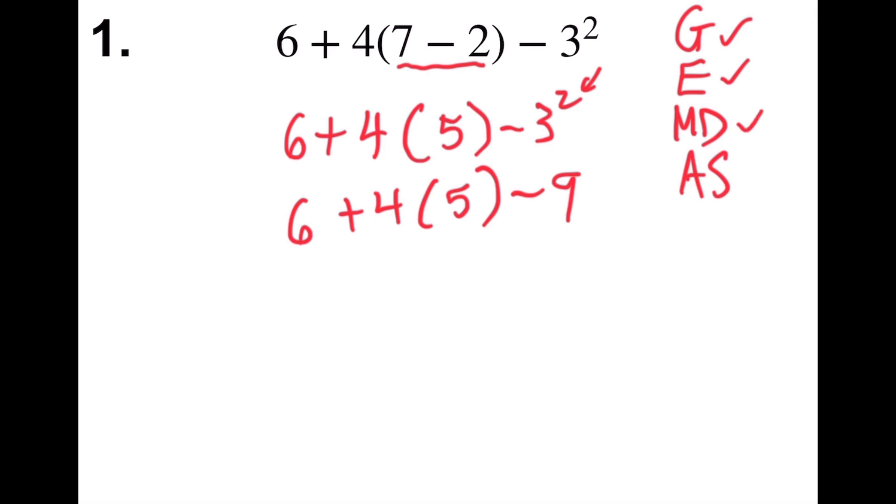Next, multiply or divide from left to right. I have 4 times 5, so I will have 6 plus 20 minus 9.